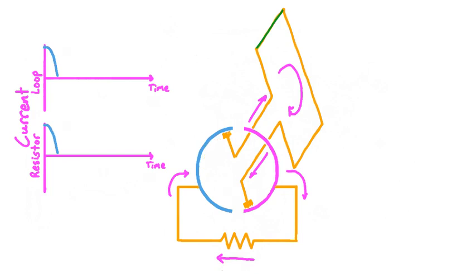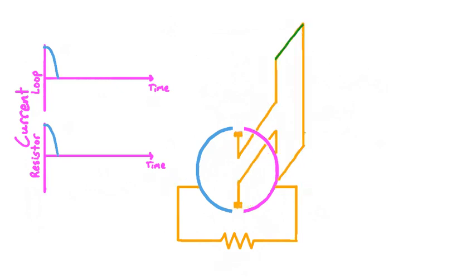Now let's see what happens when the loop rotates just a little bit farther so it's totally vertical and perpendicular to the magnetic field. At the moment the loop is vertical, the brushes of the commutator are exactly aligned to the non-conducting gap between the two halves of the split ring. Because the brushes are not making electrical contact to the ring, and because the current in the loop is zero when the loop is vertical, there is no current through the resistor.